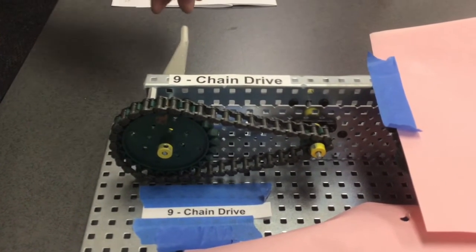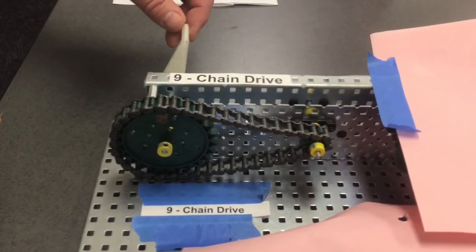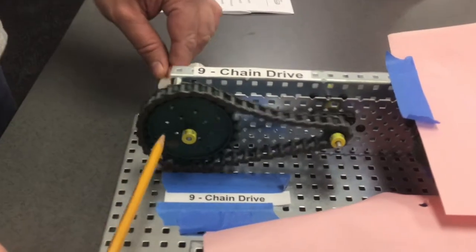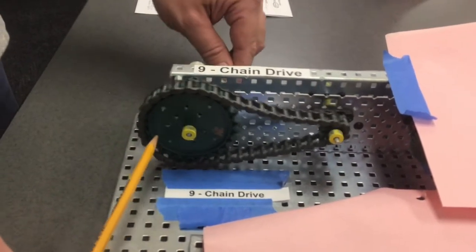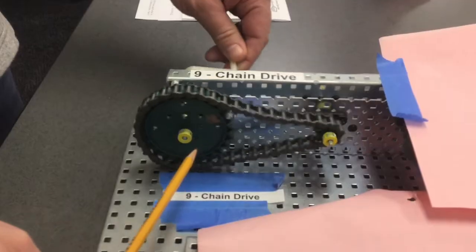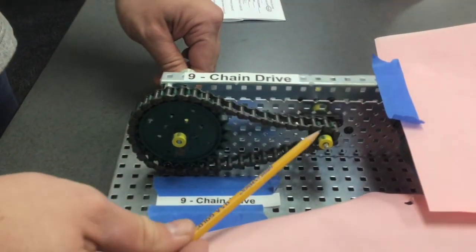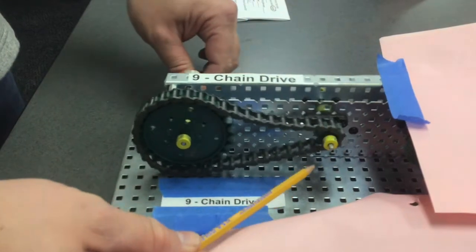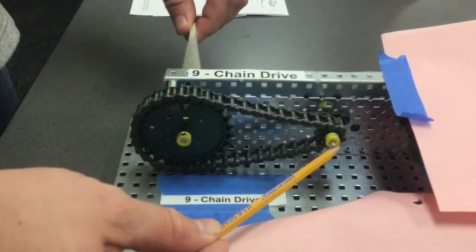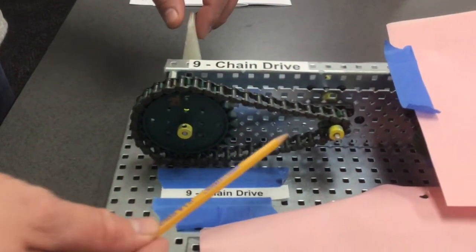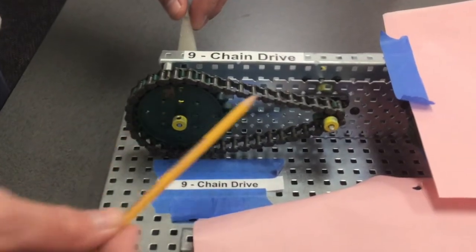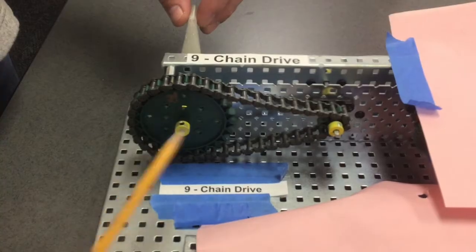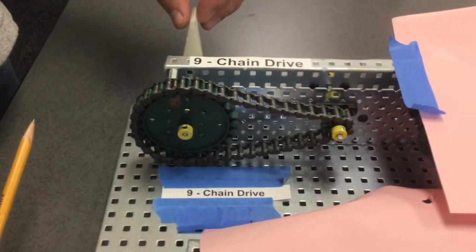Now let's talk about the direction of travel between the input and output. Notice this is moving, and in other mechanisms we had different types of movement, but here the chain transfers the same movement. They both move in a clockwise motion.